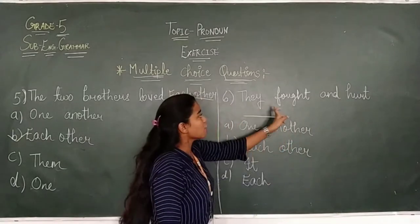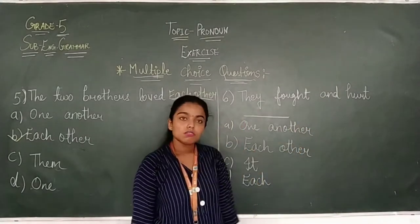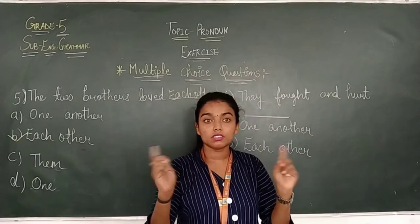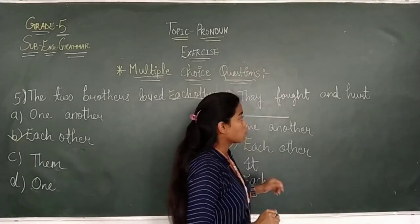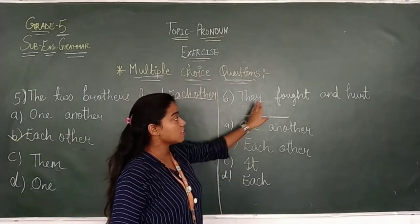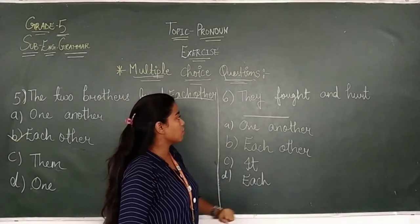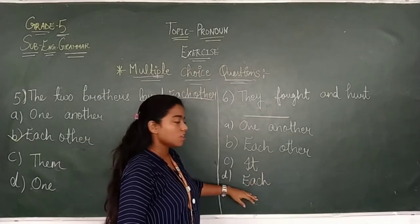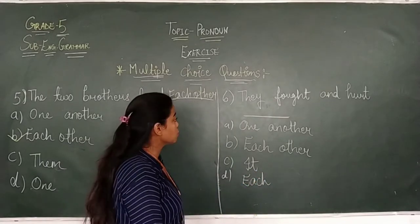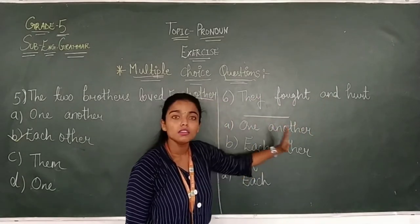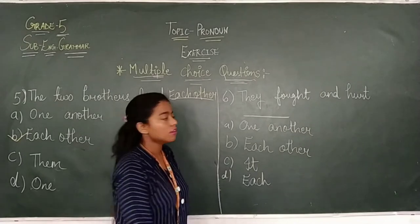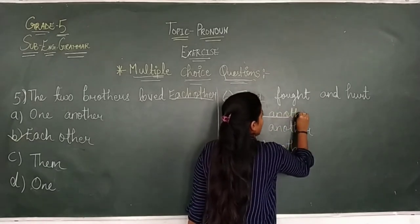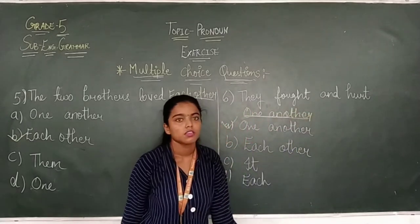Now, in the sixth number. They dash and dash. So what will happen? They fought and fought. Here we have two persons. Now, which pronoun we will use? One another, each other, each, or yuck. So they fought and fought, one another. Ek dusre ko, right? So which pronoun we will use? One another.